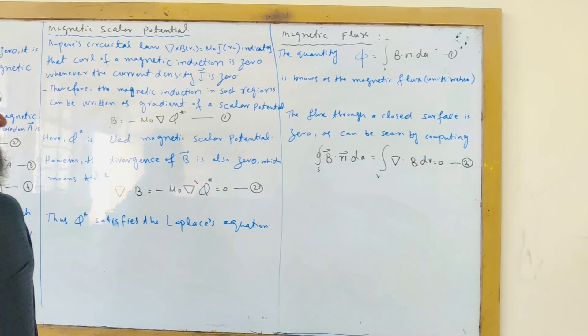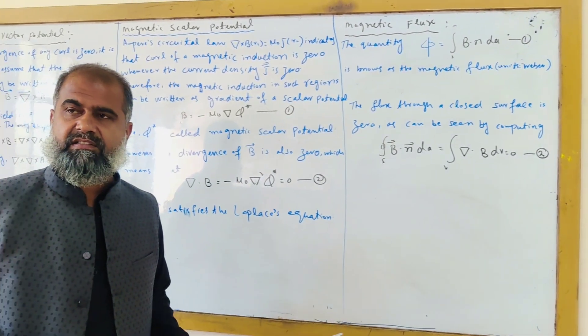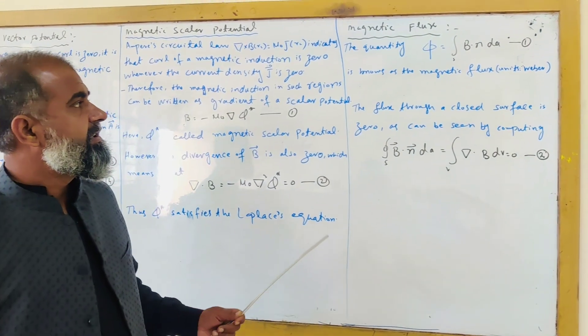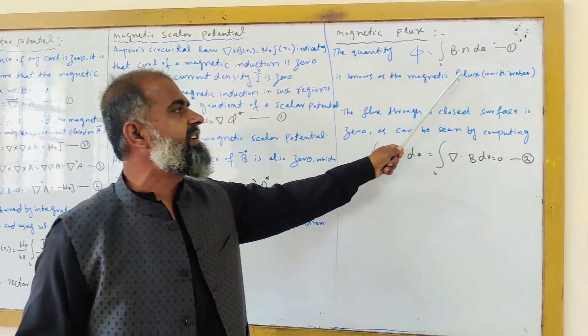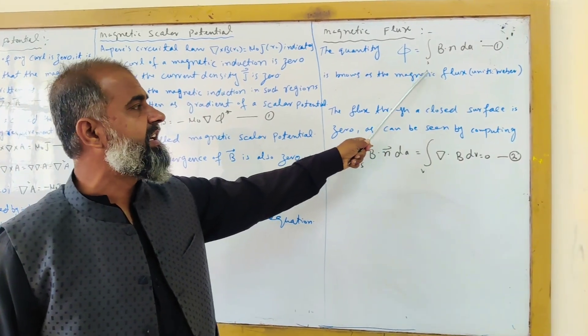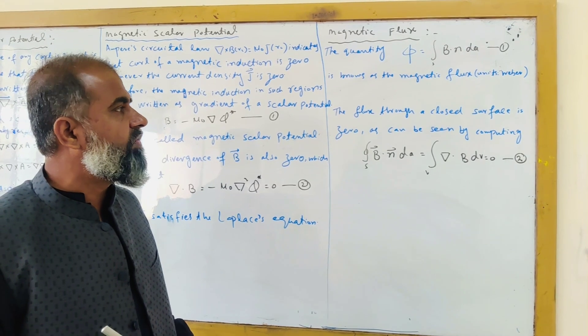The third definition is the magnetic flux, just like electric flux. The quantity phi equals B dot n dA, the surface integral, is known as the magnetic flux.